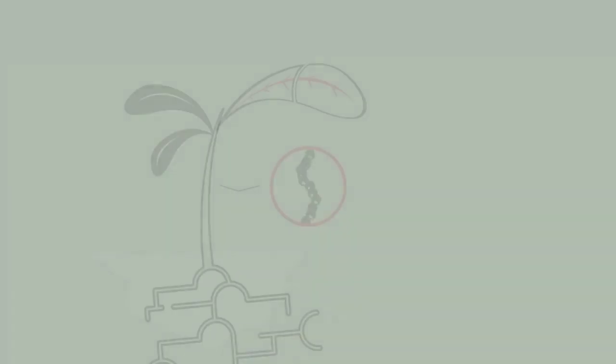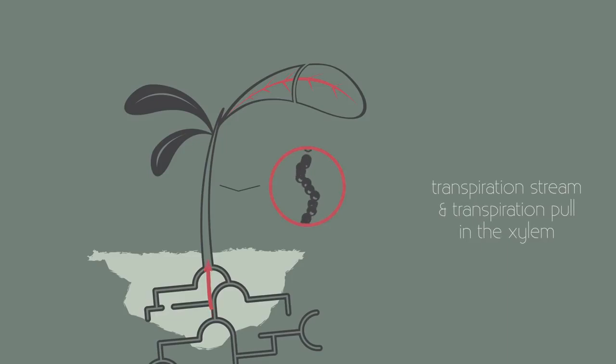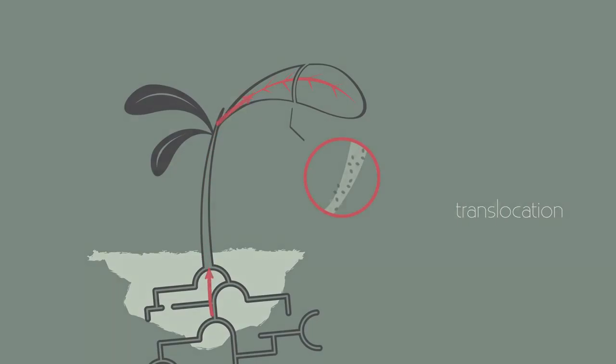We had the transpiration stream and the transpiration pool in the xylem, but there are no forces causing translocation, so something different must happen in the phloem.